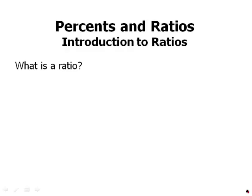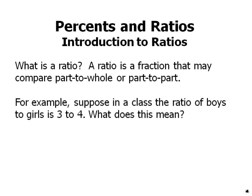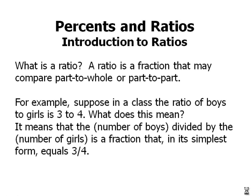Now we can begin ratios. Intro to ratios. What exactly is a ratio? A ratio is a fraction that may compare part to whole or part to part. For example, suppose in a class the ratio of boys to girls is 3 to 4. What does this mean? It means that the number of boys divided by the number of girls is a fraction that in its simplest form equals 3 over 4.